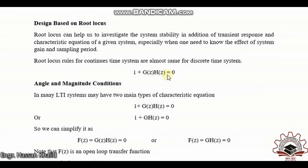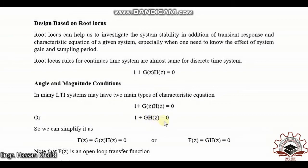What is the angle and magnitude condition? For many LTI systems we may have two main types of characteristic equations: either 1 + G(z)·H(z) = 0, or, depending on the placement of the sampler, we might get the form 1 + GH(z) = 0.